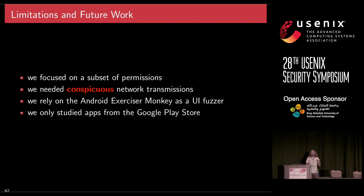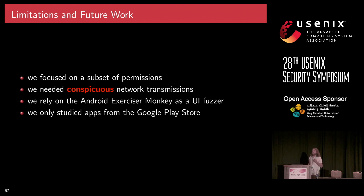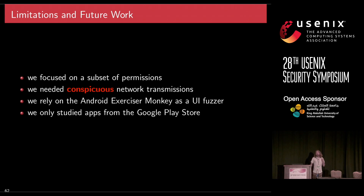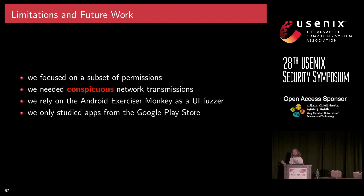Limitations of our study: we focused on a subset of permissions and didn't look at content providers, camera, or microphone — those are things we want to do next. Part of our methodology required conspicuous network transmissions, meaning we had to actually see the data being sent. There could be ways apps obfuscate it or access the information without transmitting it, which we would not notice. As a consequence, some side or covert channels being exploited may have gone undetected.